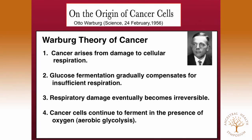If cancer is not a genetic disease, what kind of a disease is it? Otto Warburg, many years ago, did most of the work. All cancer arises from damage to cellular respiration. Glucose fermentation gradually compensates for inefficient respiration. Respiratory damage eventually becomes irreversible, and cancer cells continue to ferment. We have expanded this now to include glutamine fermentation. Tumor cells can ferment not only carbohydrates, but also some amino acids, in particular glutamine. If we don't target glutamine, we won't get complete management of the disease, although targeting glucose will certainly be very effective.